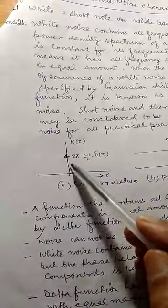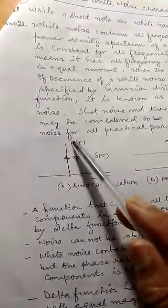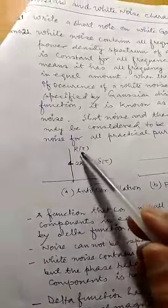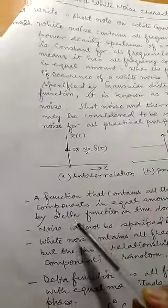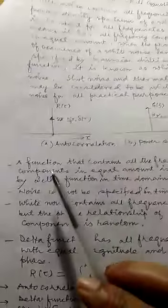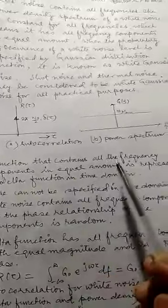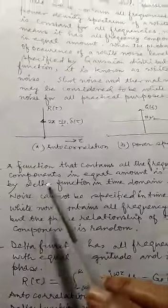It has been indicated that is impulse function. So here white noise has been shown in time domain by the impulse function. So let us see more things. That is, a function that contains all the frequency components in equal amount...